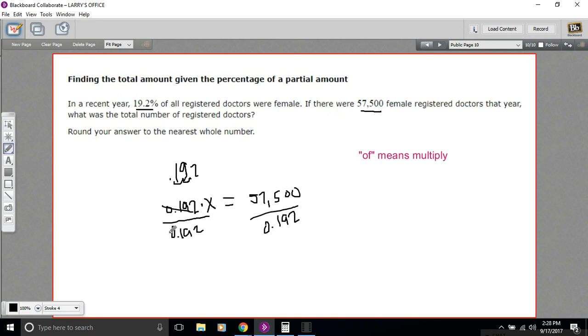So our problem over here, these cancel. So our problem comes down to 57,500 divided by 0.192. So let's find out what that is.